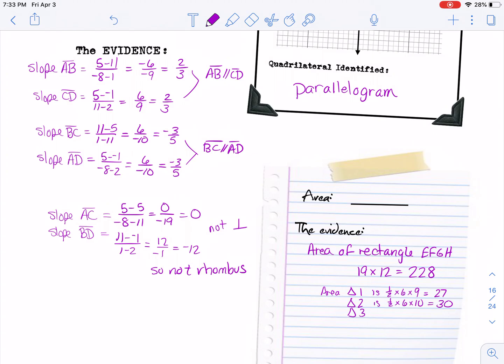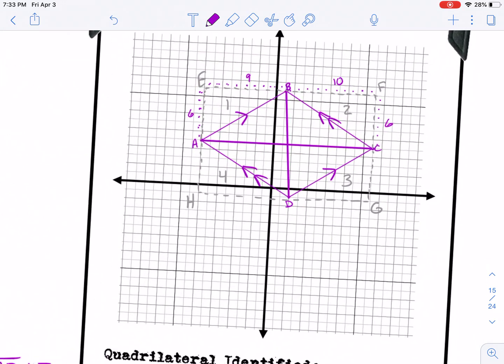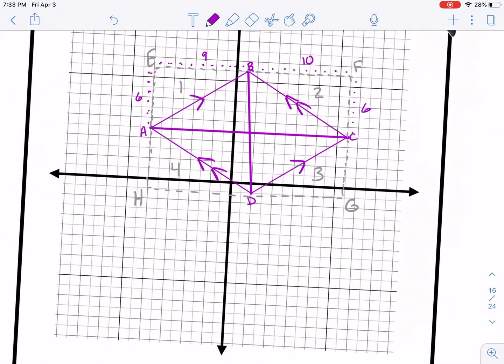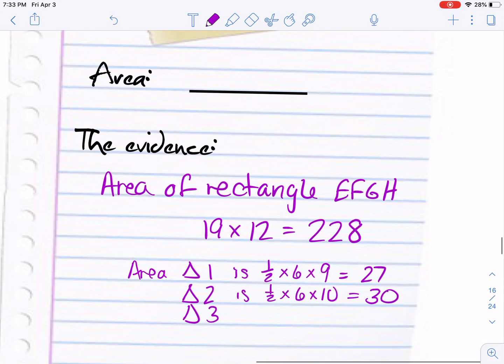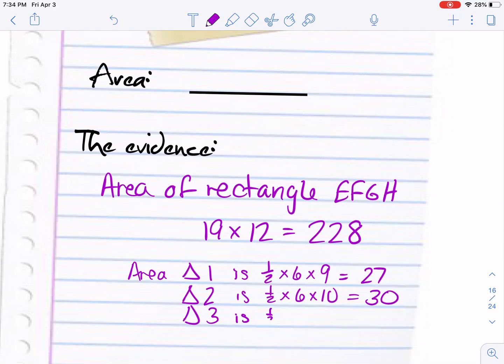And let's look at triangle number 3: 6 by 9. So that one is going to give us another 27, because it's 1/2 of 6 times 9.